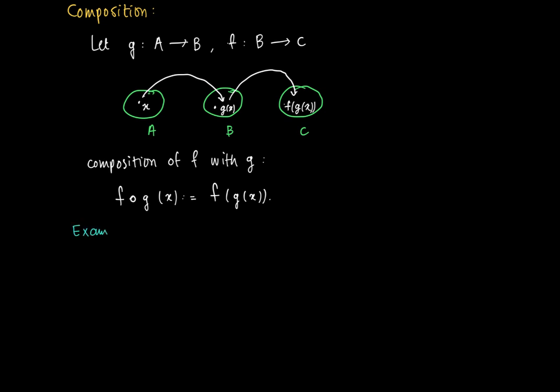So for example, suppose we are given a mapping f which is defined on the reals, so f is a function from R to R given by f(x) equals minus 1 plus x squared. It's a straightforward quadratic function. And suppose we look at g. g is a function defined on the closed interval [-2, 2] to R, which is given by g(x) is the square root of 4 minus x squared.